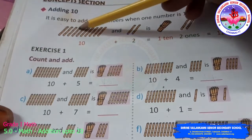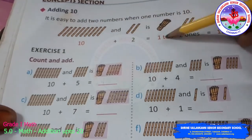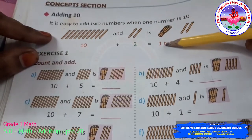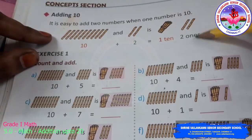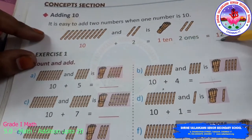1, 2, 3, 4, 5, 6, 7, 8, 9, 10, 11, 12. But you know that this is 10, that is 1 ten, this is 2 ones. So you already know that 1 ten and 2 ones make 12.